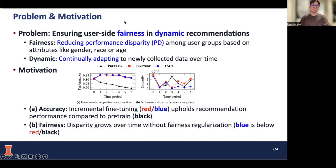The problem we want to solve is ensuring user-side fairness in dynamic recommendations. For the fairness aspect, we focus on reducing performance disparity among user groups defined by sensitive attributes like gender, race, or age. For the dynamic aspect, we focus on the setting where the model should continually adapt to newly collected data over time to ensure high-quality recommendations.